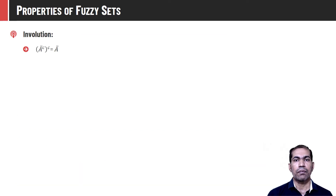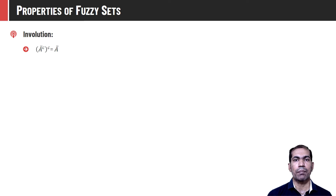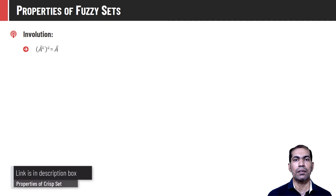Fuzzy sets follow almost all the properties of crisp sets. The first property we are going to talk about is the involution property. It says the complement of the complement of a set is the set itself — that is, complement of A-bar complement is A-bar itself. For fuzzy sets I am not going to take examples here, as all the properties have been discussed with examples in the video on properties of crisp sets, so you can refer to that video.